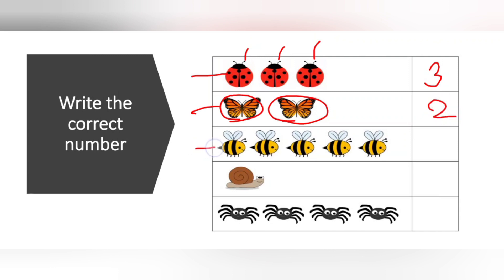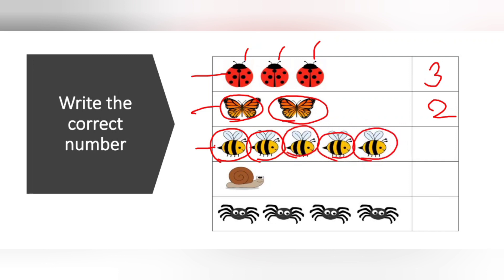In the third one, how many bees? Again count: 1, 2, 3, 4, 5. So how many are there? 5. Write the number 5. Here only 1 is there, right? So write the number 1.